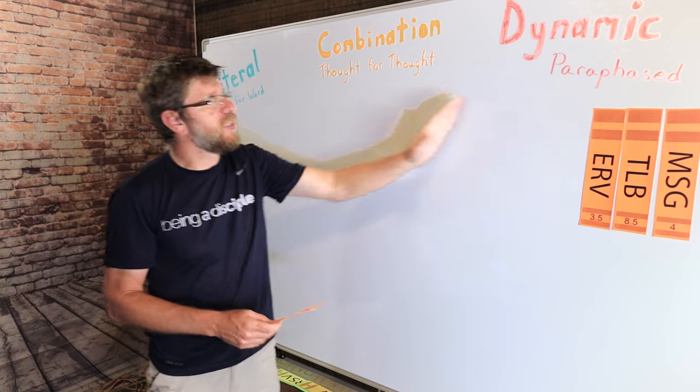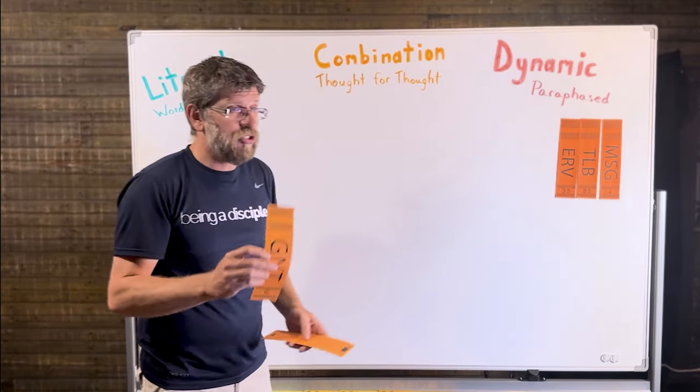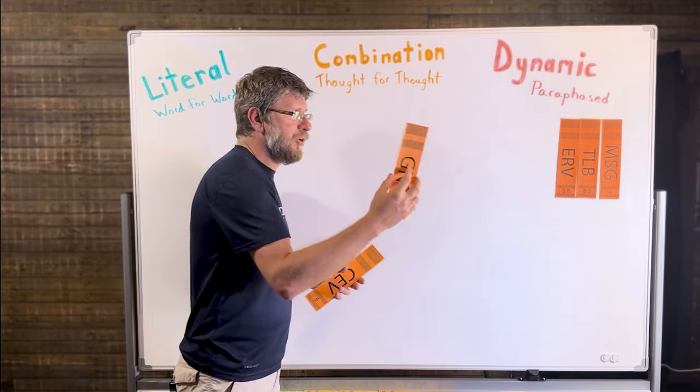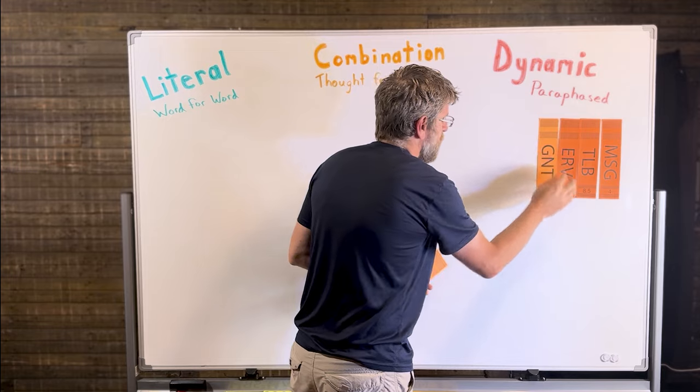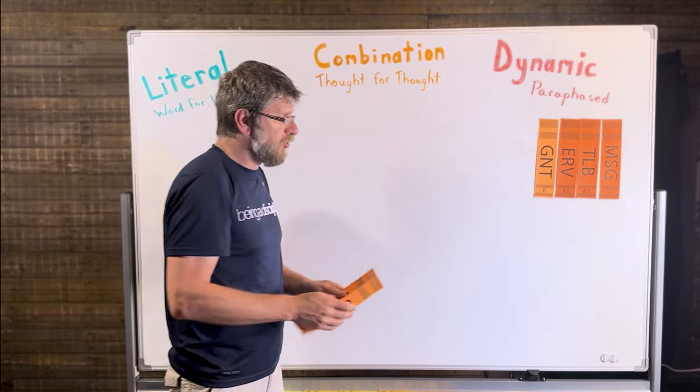Another one that kind of fits in between the dynamic and heading towards the combination is the Good News Translation. The Good News Translation was trying to take this gospel message and put it into modern-day English as well, but keep a very low reading level. And that is a reading level of six.